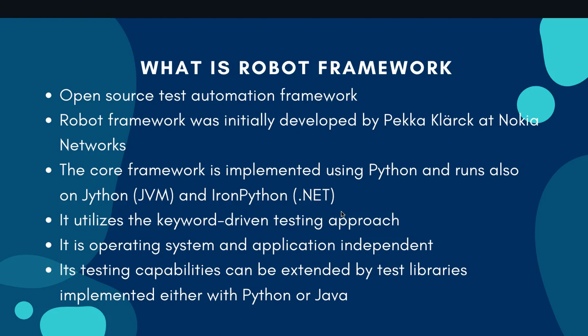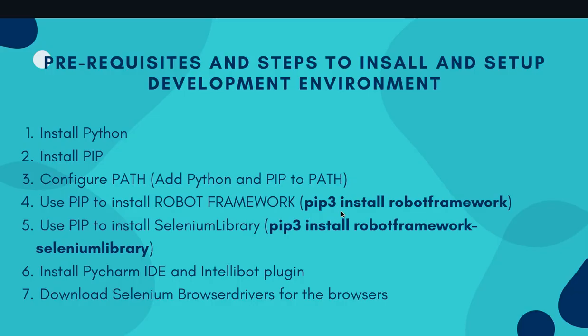That's a brief introduction about Robot Framework — we won't go into too much theoretical detail. The next step is to install the prerequisites and the development environment. The first step is to install Python and PIP. If you're installing Python, PIP is included by default unless you deselect it. I've already created a tutorial on how to install Python, PIP, and configure the path — you can follow steps one, two, and three in that tutorial, which will be added to this playlist as well.